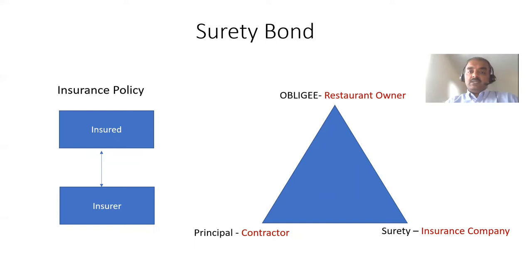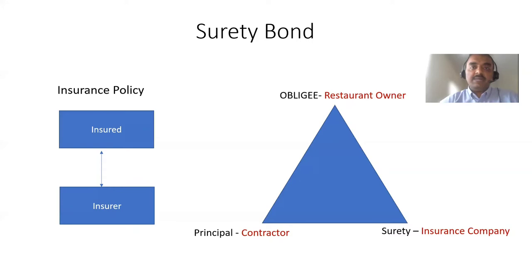When they do that, they get into a contract. The restaurant owner gets in contact with the contractor, gives all his requirements, and they come to a contract. The happy part is everything goes well — the contractor completes it on time and the restaurant owner is happy. But sometimes the contractor cannot complete the work as per the contract. What happens in those scenarios? That's where the surety bond comes into play.